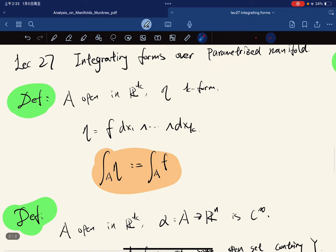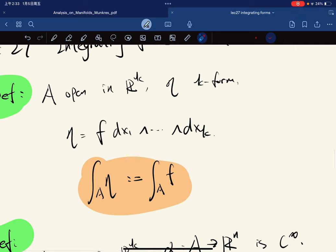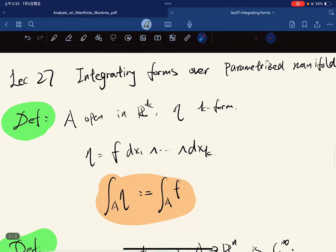So first we define a open in R^k, nita as a k-form. Then nita can only be written uniquely as this. And then we define the element of nita over A to be the scalar function over A. Okay, so this is a scalar function.